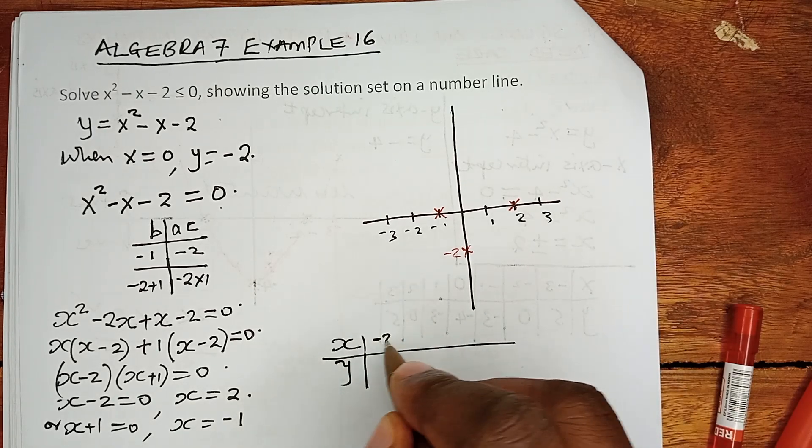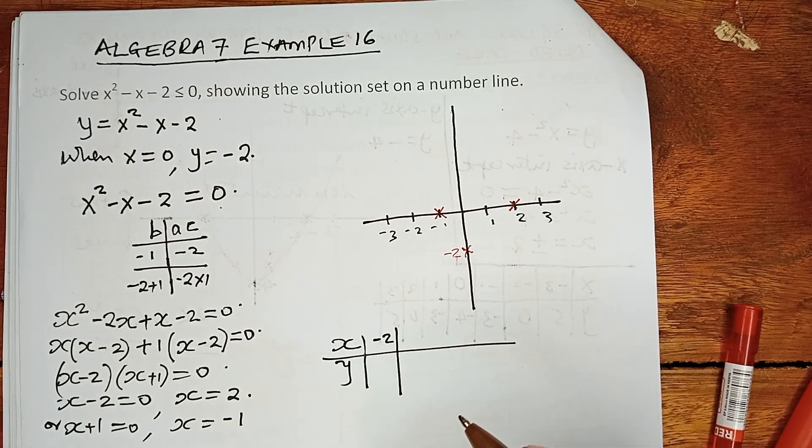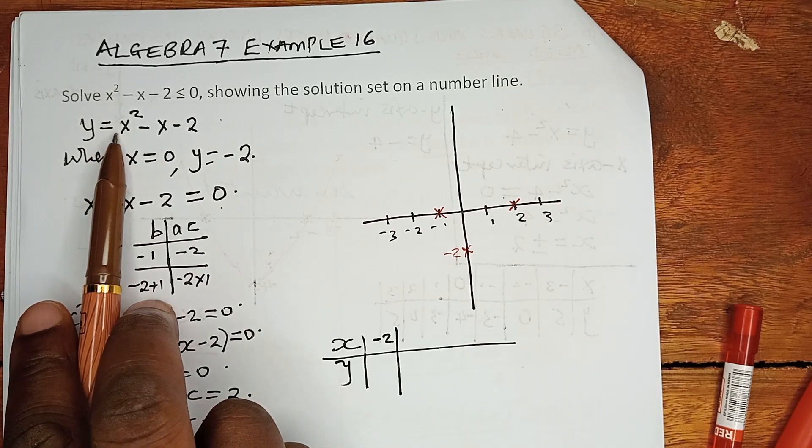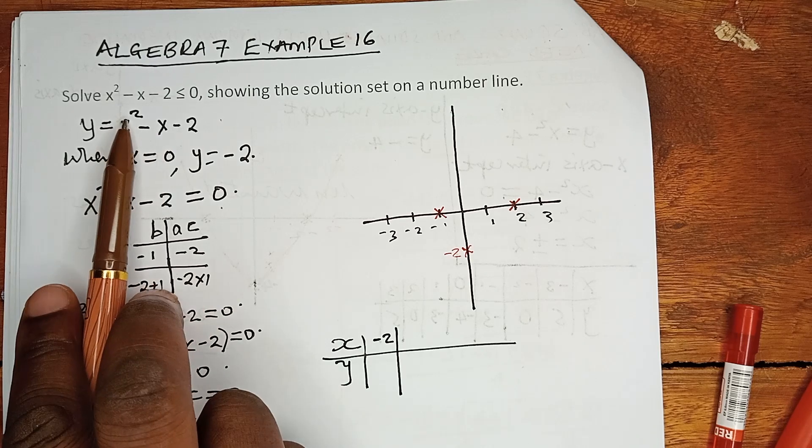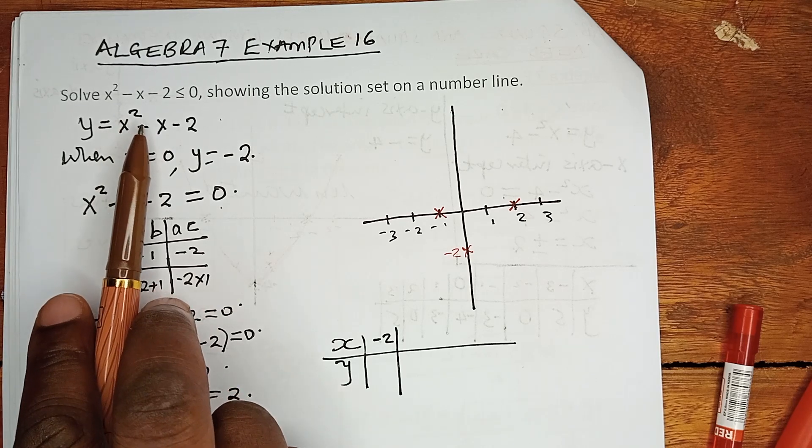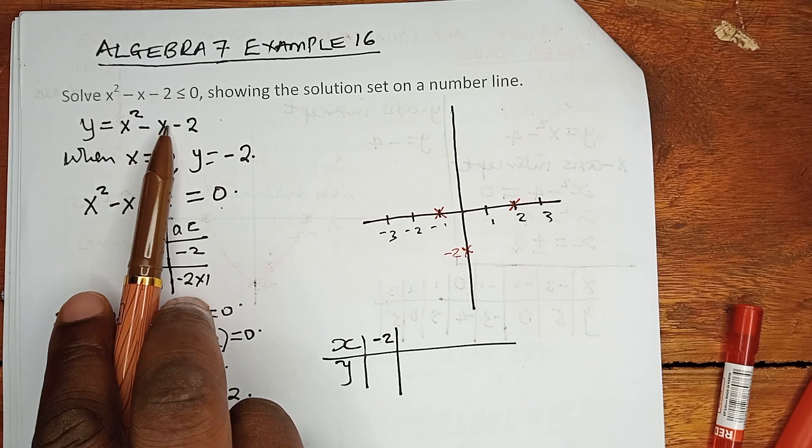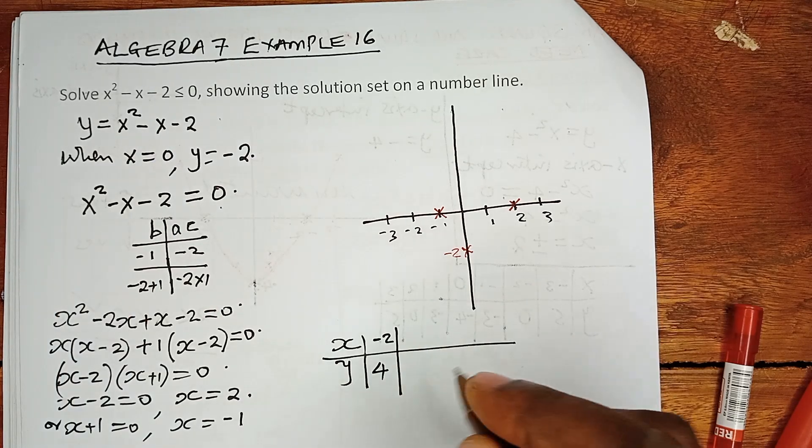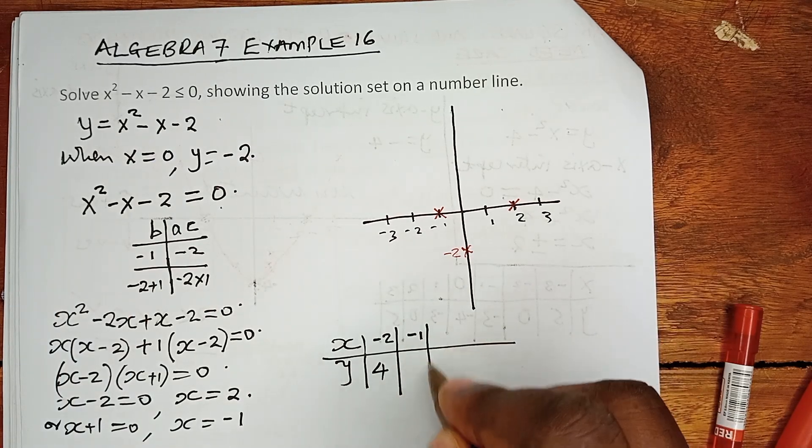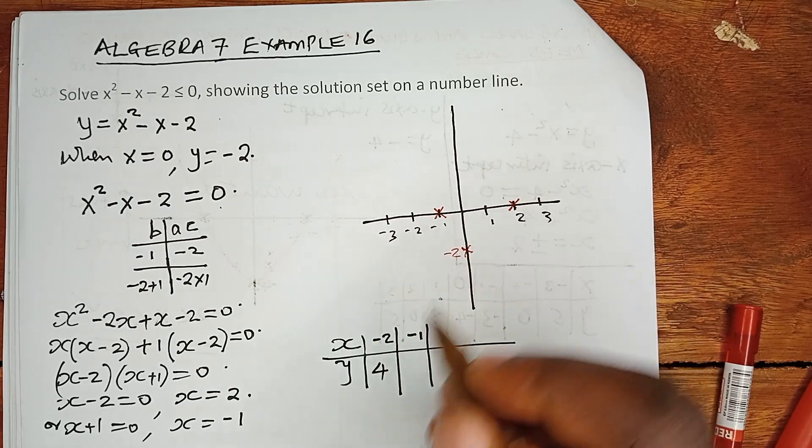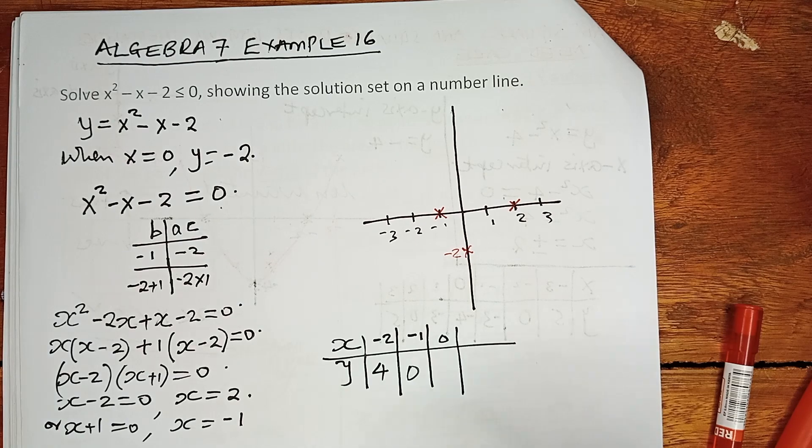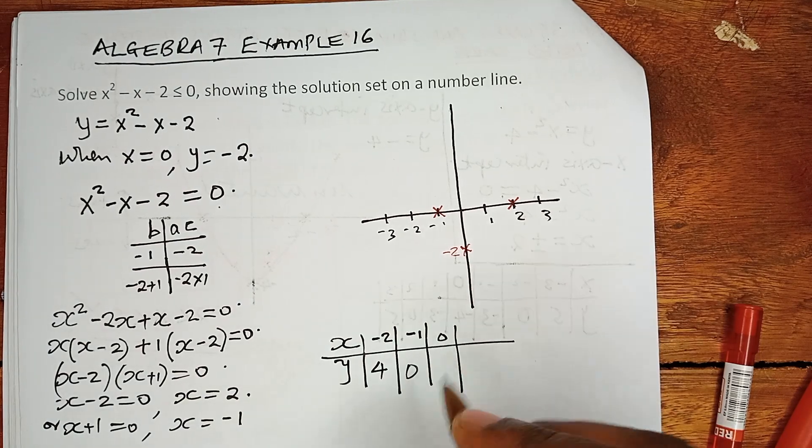When x is negative 2, what is the value of y? Negative 2 squared minus minus 2. Negative 2 squared is 4. Minus minus 2, that is plus 2, is 6. 6 minus 2 is 4. When x is negative 1, we can see y is 0.